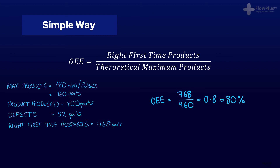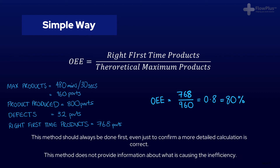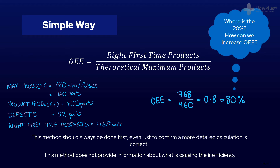Its OEE is therefore 768 divided by 960, which equals 0.8 or 80%. That is the simple, easy way to calculate OEE. I would really recommend always doing this simple calculation first, then following it up with the more detailed approach. That way you can confirm afterwards that they both match and that no mistake has been made. The limitation with this simple approach is that it doesn't provide much information apart from an end number. So out of the 80% overall equipment effectiveness, we should be asking: what about the 20% left over? Where has it gone, and how can we reduce it and improve the OEE?